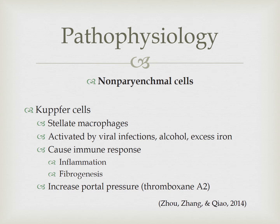A second kind of non-parenchymal cell is the Kupffer cell, known as the stellate macrophages. Like macrophages from the immune system, they engulf bacteria and detoxify potentially harmful compounds such as drugs, alcohol, and chemicals that are ingested. Viral infections, alcohol, and high levels of iron activate these cells and cause an immune response that promotes inflammation and fibrogenesis.